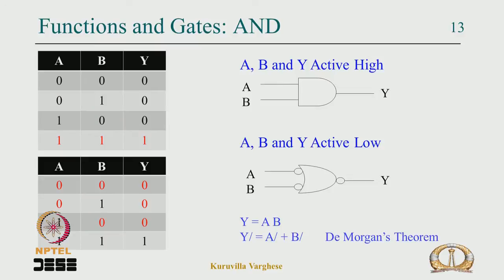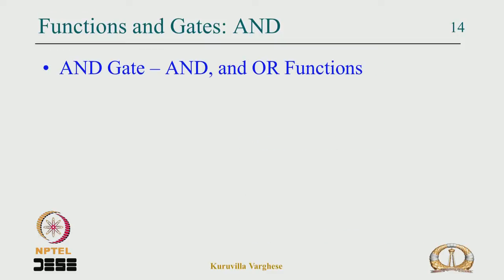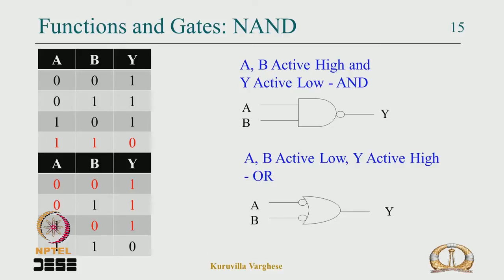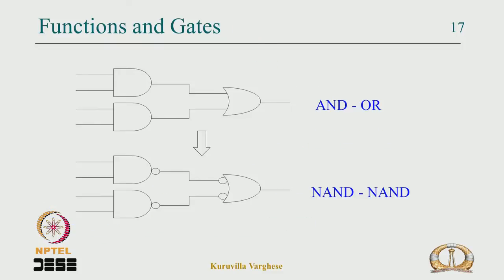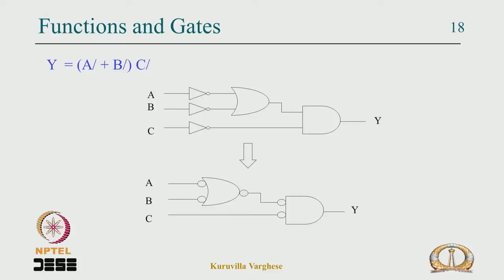Then we looked at differentiating between gates and the functions they implement, essentially bringing De Morgan's theorem into our concept. We have seen that NAND and NOR are universal gates, and we have seen some examples of AND-OR being implemented using NAND-NAND gates.